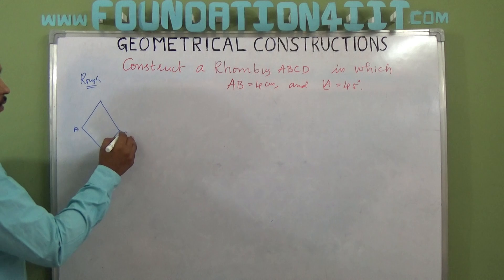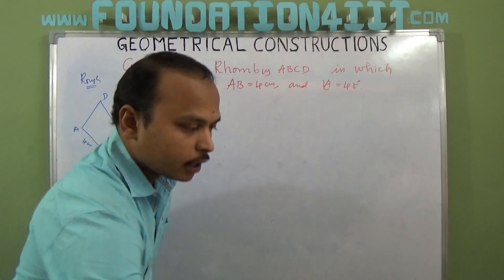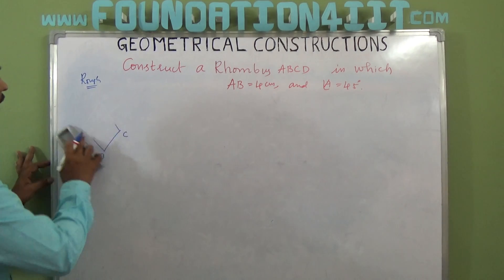ABCD, so AB is 4 centimeters and angle A is 45 degrees. Always take the given side as the base.